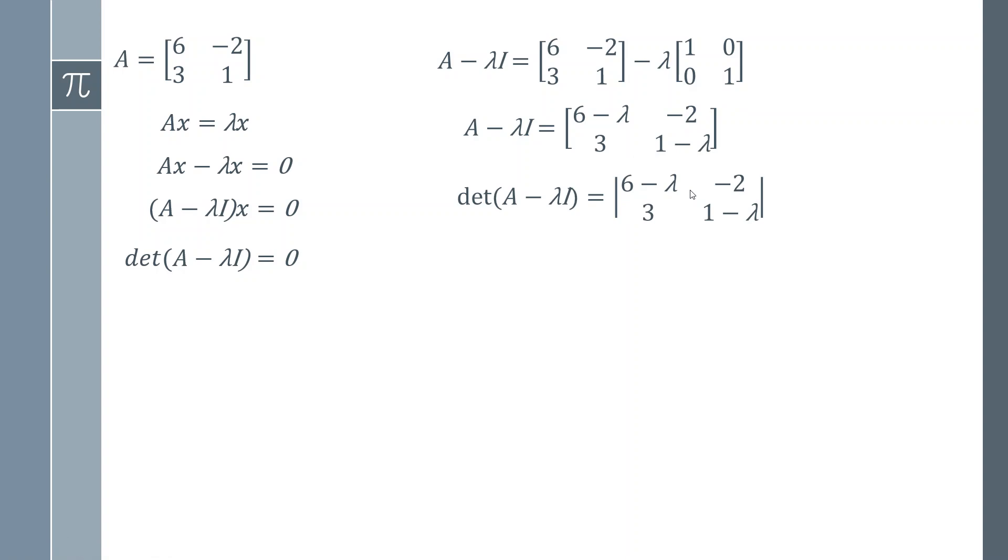We then need to find the determinant of this, and finding the determinant of a 2x2 matrix is very simple. We simply take the 6 minus lambda, multiply it by the 1 minus lambda, and then subtract minus 2 times 3. So we get this expression here. You should by now be able to multiply things out very easily, so I'm not going to focus on giving a lot of description to these steps. We'd simply multiply that out and then rearrange it to get a nice polynomial characteristic equation.